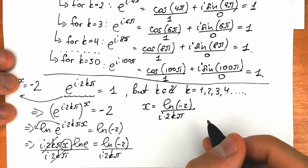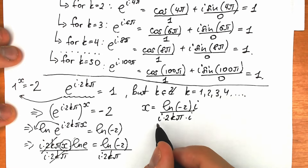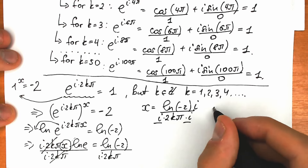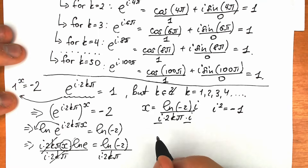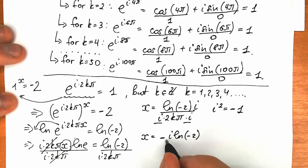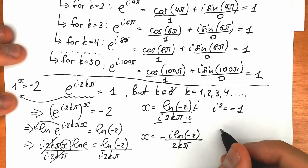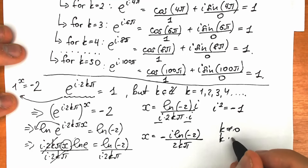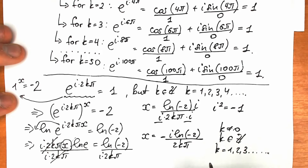Now I'll show a nice approach: multiply numerator and denominator by i. So i times i gives i squared, and since i squared equals minus 1, the overall sign becomes negative. As a result: x equals minus i times natural log(−2), all over 2kπ. Note that k is not equal to zero, and k is an integer: k equals 1, 2, 3, and so on.